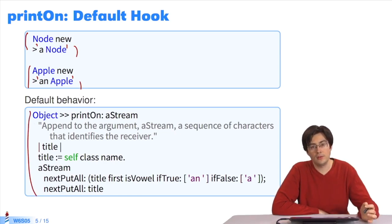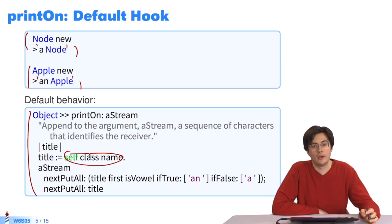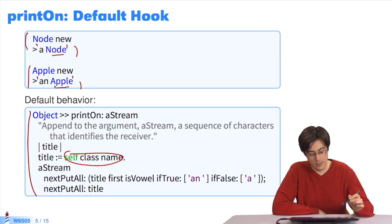We see that this behavior and the default behavior are implemented in the class object. So the default behavior of printString for any object whatsoever is: 1. Recover the class names. In this case, node and apple. And 2.